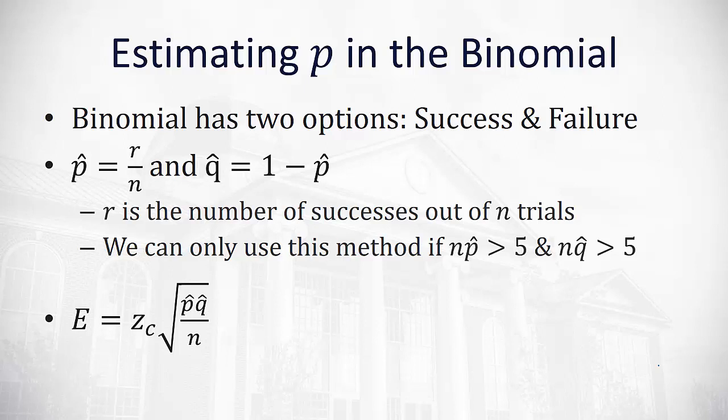Other than this new formula for the error, the process of the confidence interval is exactly the same. We'll subtract and add that error to the sample proportion, and we've got our lower bound and upper bound for the confidence interval.